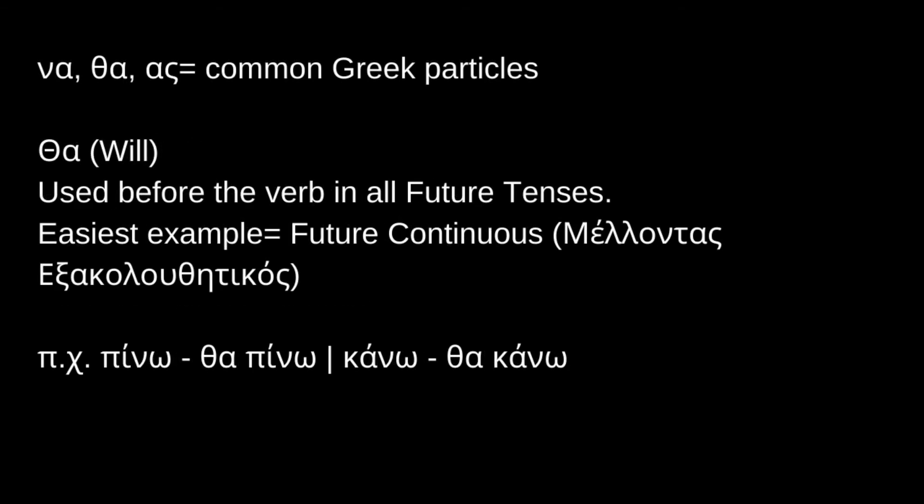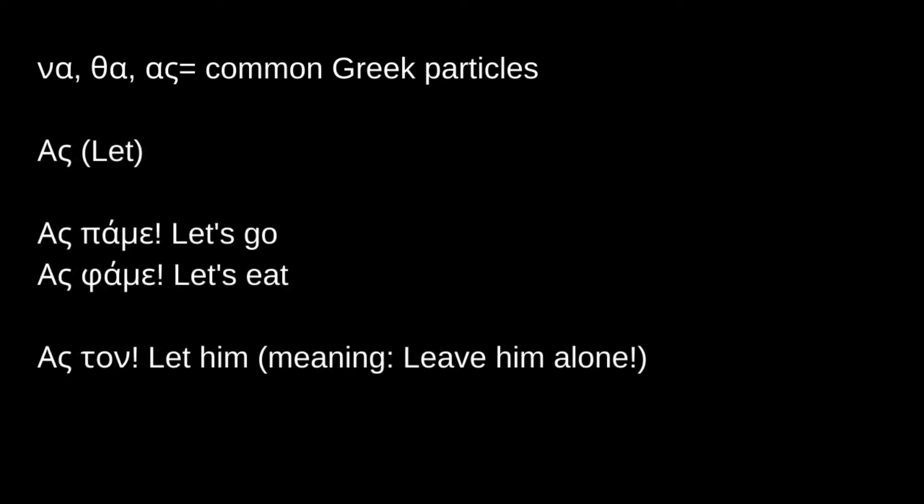ΘΑ is similar to WILL in English — it is used before the verb in all future tenses. The easiest example is the Μέλλοντας Εξακολουθητικός, the future continuous: all you have to do is add ΘΑ before the verb in the present tense. Πίνω — Θα πίνω: I drink — I will be drinking. Κάνω — Θα κάνω: I do — I will be doing. ΑΣ is used similarly to LET in English: Ας πάμε — let's go; Ας φάμε — let's eat; Αστον — let him, meaning leave him alone.